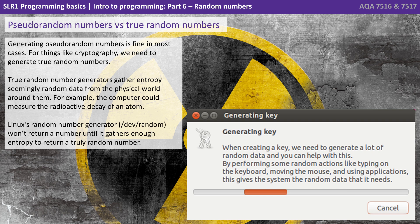For example, the computer could measure the radioactive decay of an atom. Linux's random number generator won't return a random number until it gathers enough entropy to return a truly random number.